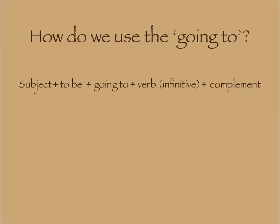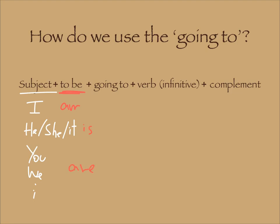How do we use 'going to' in a sentence? We first need the subject — I, he, she, it, we — then we need the verb 'to be' in the right form: I am, he is, they are. Then we use 'going to', and then the main verb in infinitive form, and finally we put the complement.